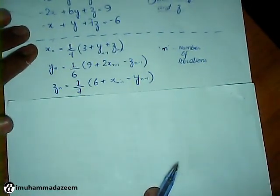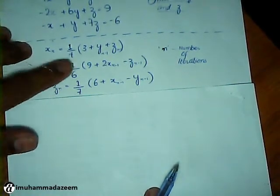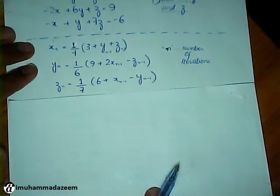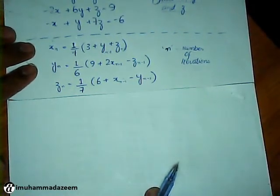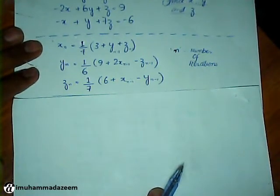And to isolate Z from the next equation. The main thing here is that n is written and n minus 1 is written here. Here n is the number of iterations.